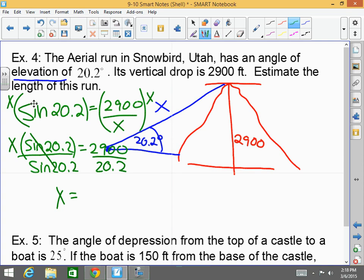So x will equal 2900 divided by sign of 20.2, and that will equal 8,398.5 feet. That's a pretty good run on a ski slope. That's a little, not a little, about almost a mile and a half. And that place does exist. It's a really cool, cool run.